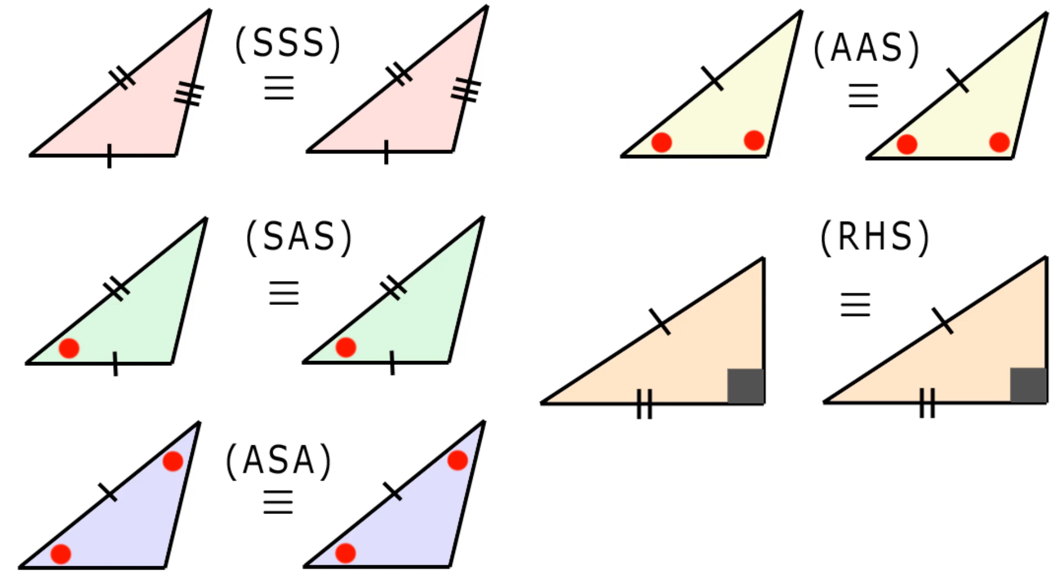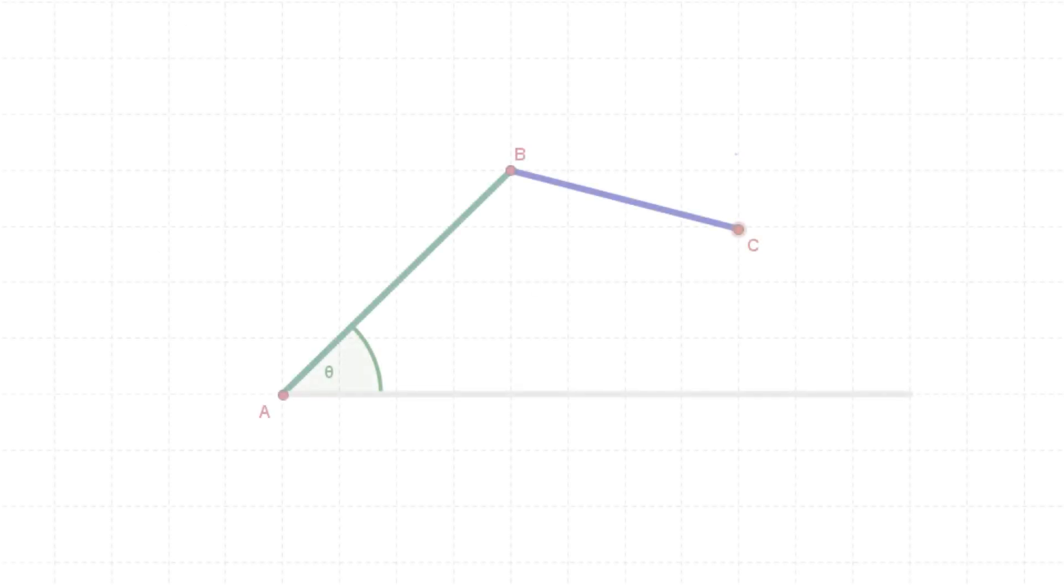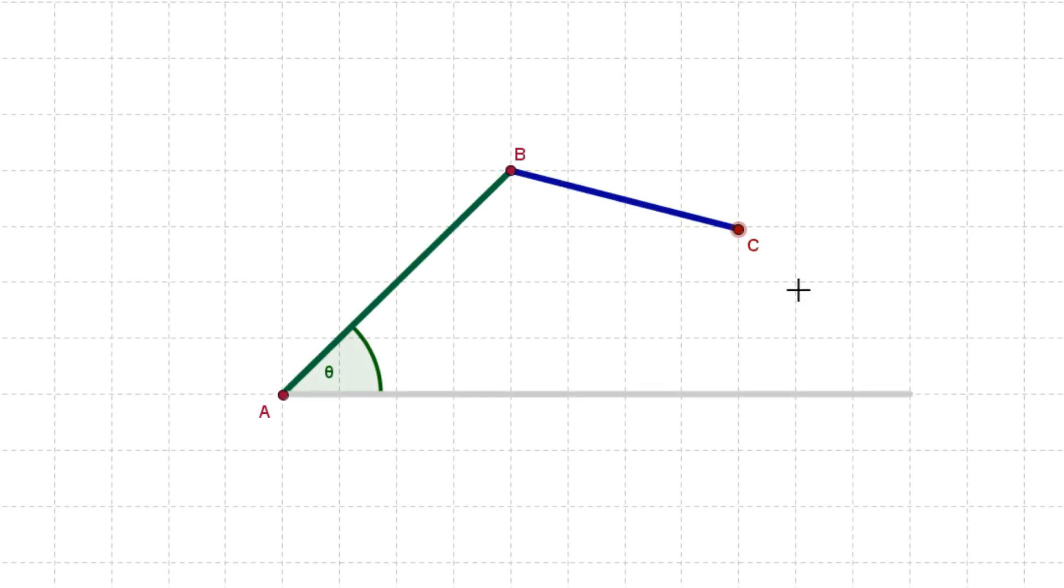Now, you might be asking yourself, why can this set of conditions, ASS, where the angle is not included between the sides, why can this not be used for other triangles? What is so special about a right-angled triangle? Well, this diagram might help.